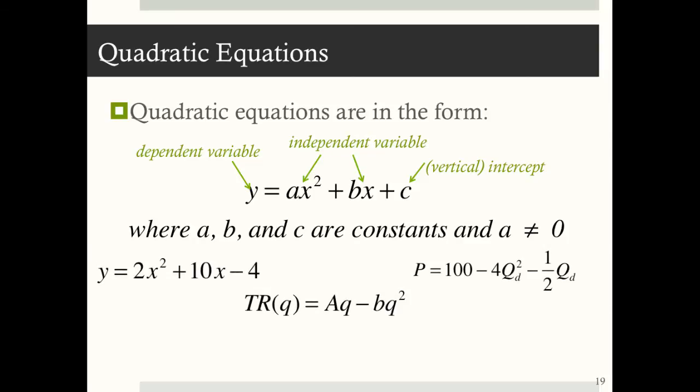All of these are examples of quadratic equations. So when y is equal to 2x squared plus 10x minus 4, the a is equal to 2, b is equal to 10, and c is equal to negative 4.